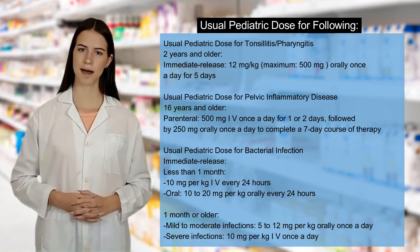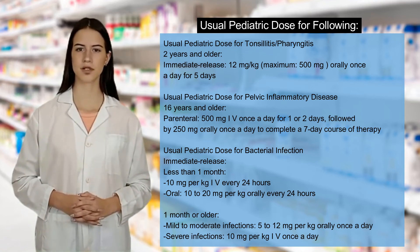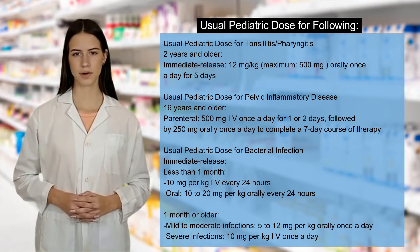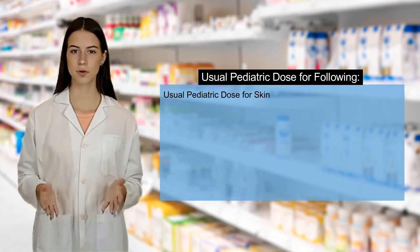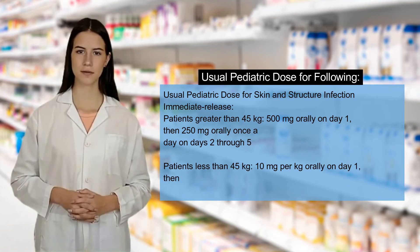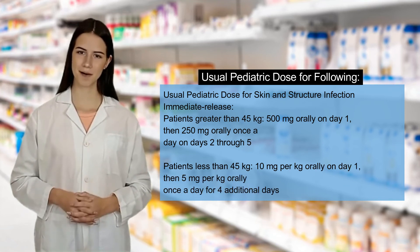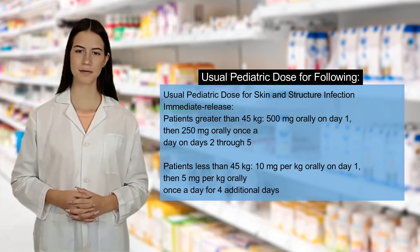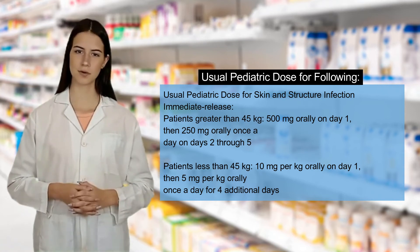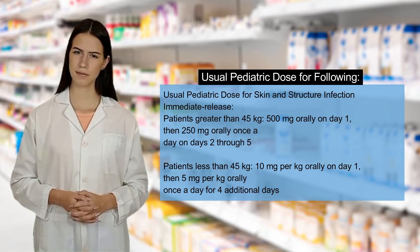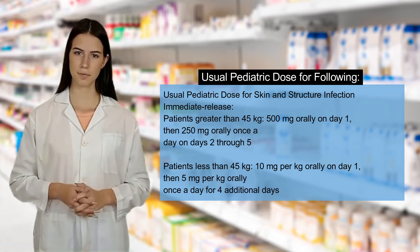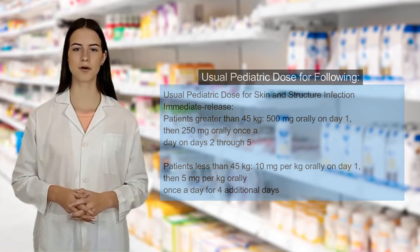1 month or older: Mild to moderate infections, 5–12 mg/kg orally once a day. Severe infections, 10 mg/kg IV once a day. Usual pediatric dose for skin and structure infection: Immediate release, patients greater than 45 kg — 500 mg orally on day 1, then 250 mg orally once a day on days 2 through 5. Patients less than 45 kg — 10 mg/kg orally on day 1, then 5 mg/kg orally once a day for 4 additional days.